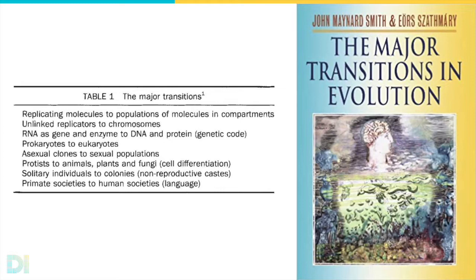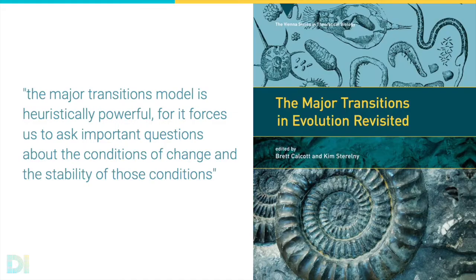Smith and Shathmari emphasized important features of major transitions, for example that they are contingently irreversible and increase centralized hierarchical control. As the philosophers Brett Calcott and Kim Strelny observe, the major transitions model is heuristically powerful, for it forces us to ask important questions about the conditions of change and the stability of those conditions.